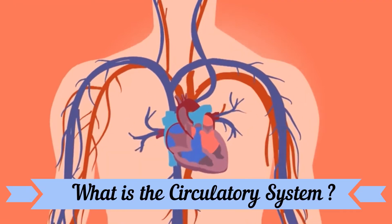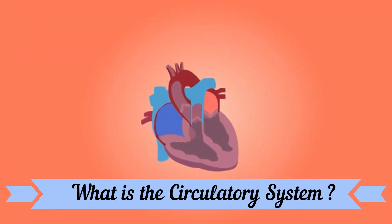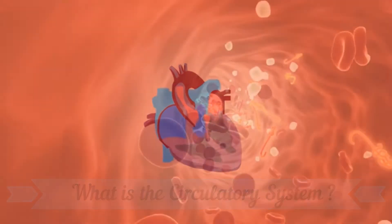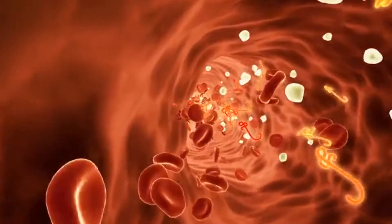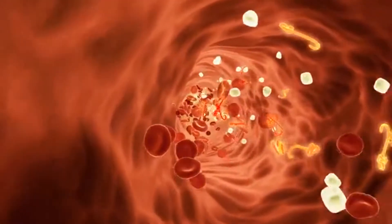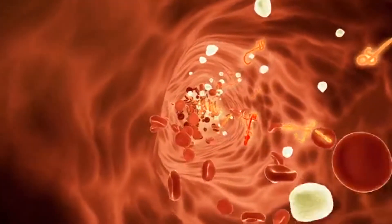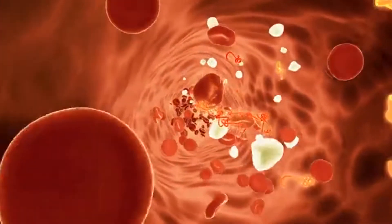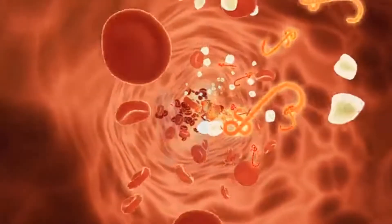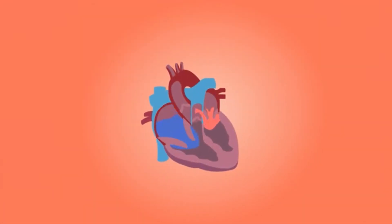What is the circulatory system? The circulatory system moves blood throughout the body. The blood carries oxygen and nutrients to different parts of the body and removes waste from them. The organs of the circulatory system are the heart and the blood vessels.